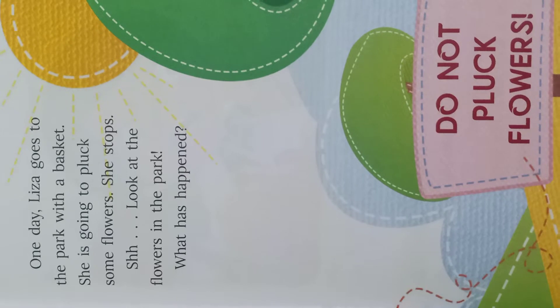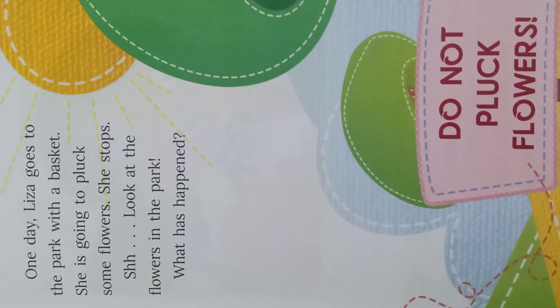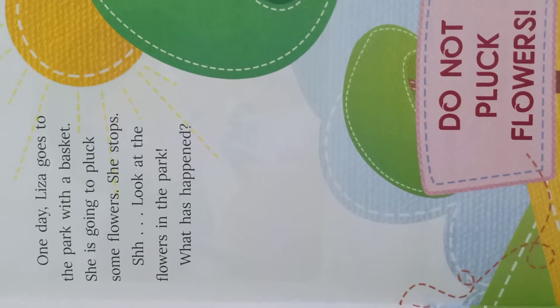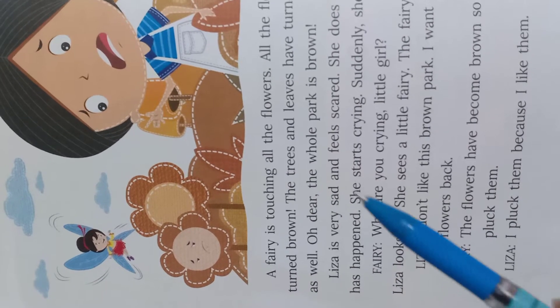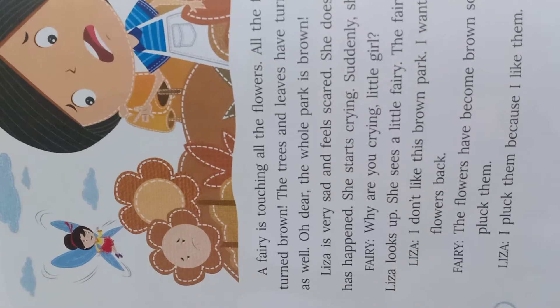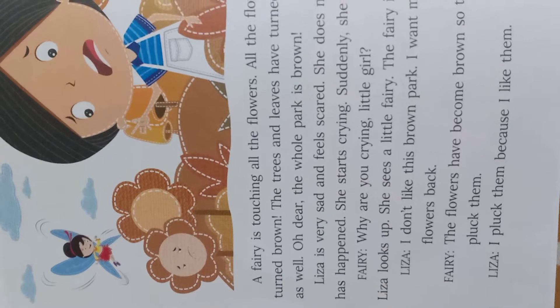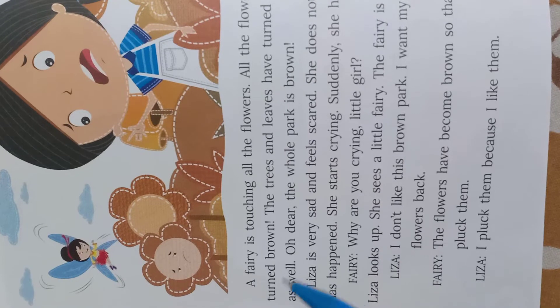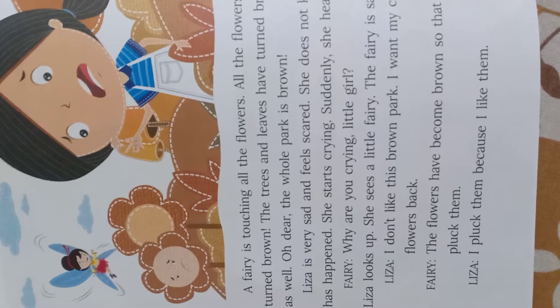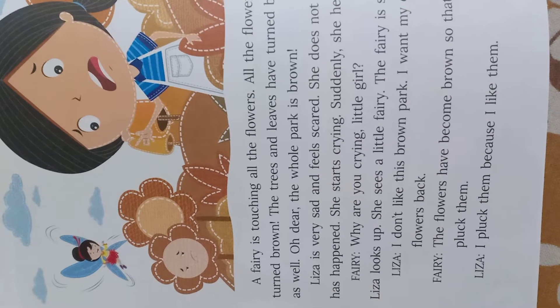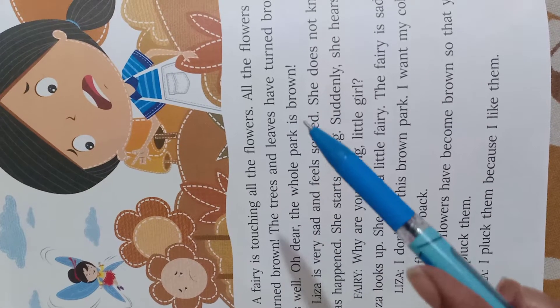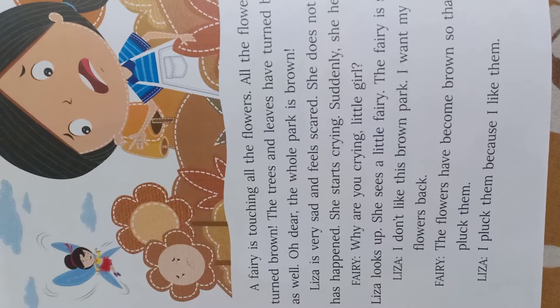She stops — वह रुक गई। Look at the flowers in the park — पार्क में जो भी flowers हैं उनको देखो। A fairy is touching all the flowers — एक fairy, यानि परी, सभी flowers को touch कर रही थी। All the flowers have turned brown — और जो भी flowers उस पार्क के अंदर थे, वो सारे brown color में change हो रहे थे। The trees and leaves have turned brown as well — पूरा पेड़ और पत्ते भी brown color में change हो गए थे। Oh dear, the whole park is brown — अरे, ये तो पूरा पार्क ही brown हो गया है।